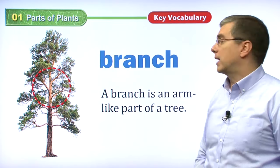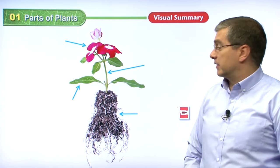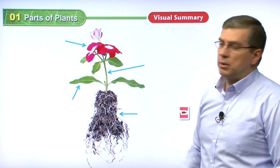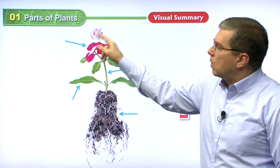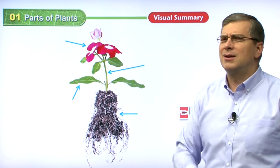Now we're ready for a little review. We have a nice picture of a plant here. It's a small, beautiful plant. The beautiful colorful part at the top — can you remember what we call this? Did you guess flower? Yes, that would be correct. This top, bright, colorful part of the plant is the flower.